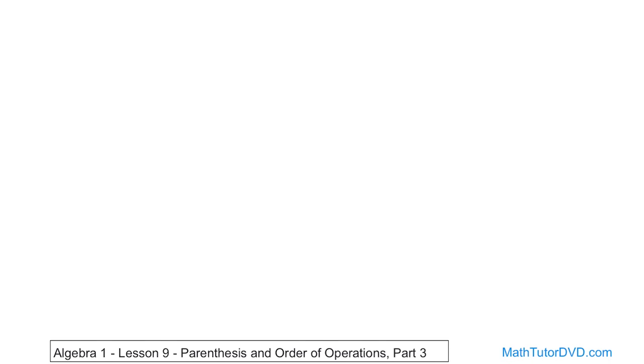Welcome back to Algebra 1. We'll continue solving some problems with parentheses and order of operations. We're going to use the same variables: t equals 6, x equals 3, y equals 4, and z equals 5. We'll use that for the remainder of the problems, and we'll get a little bit more complicated, but basically we'll be using the same rules over and over again.